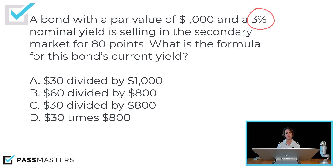The nominal yield — think of it like a tattoo on your chest. It's not going to change ever. It's a percentage of the bond's par value. So 3% of $1,000 will tell you the annual interest for the bond. 3% of $1,000 is $30. So the formula for current yield — the question didn't even ask you what current yield is, it just asked what would the formula be — annual interest divided by current market price.